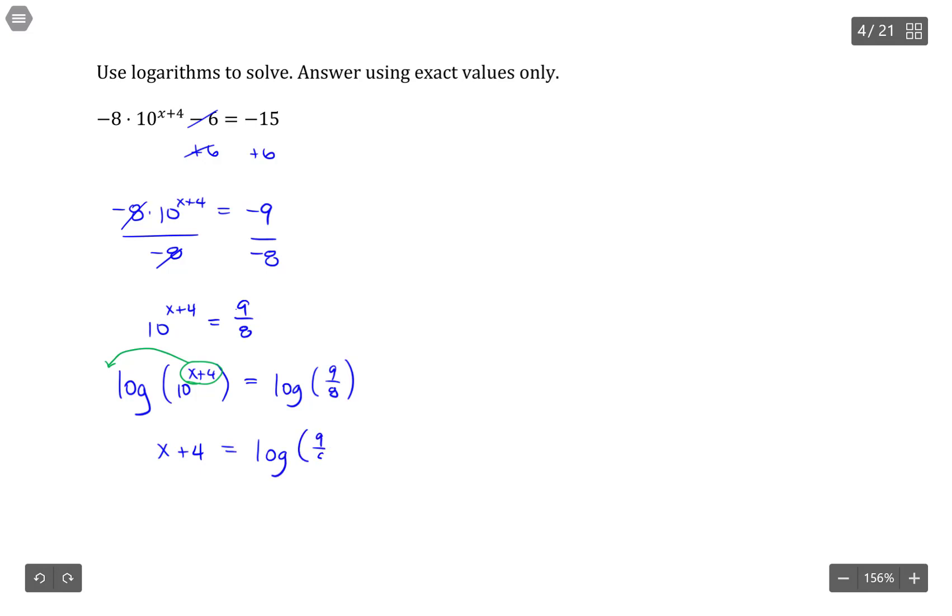So log of 9 eighths. If I subtract 4 from both sides, I end up getting x by itself.